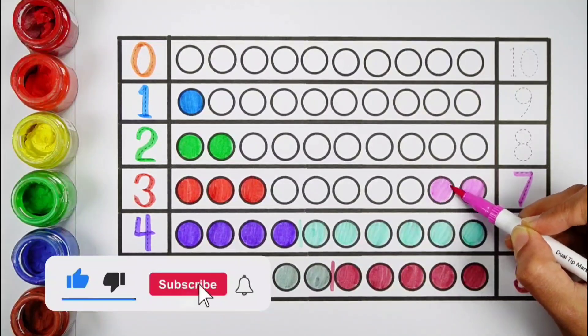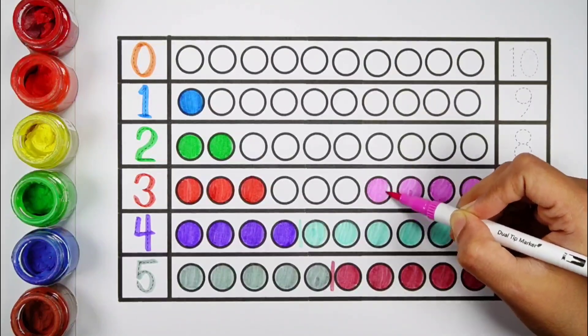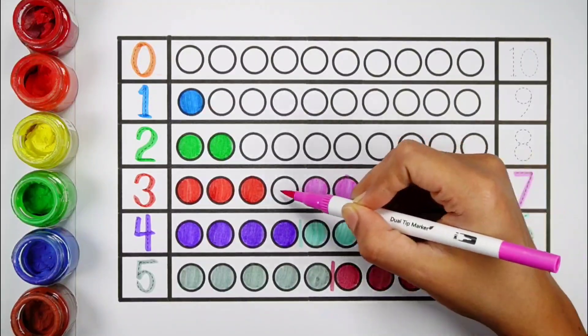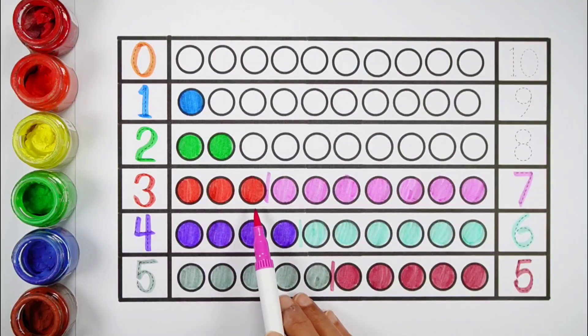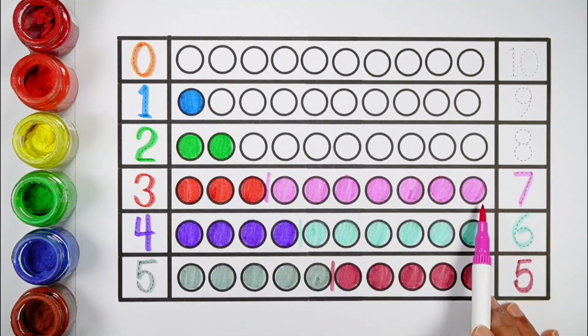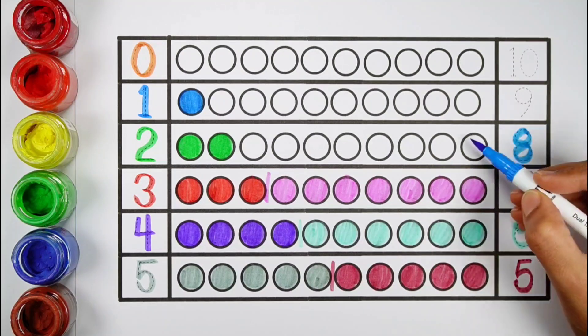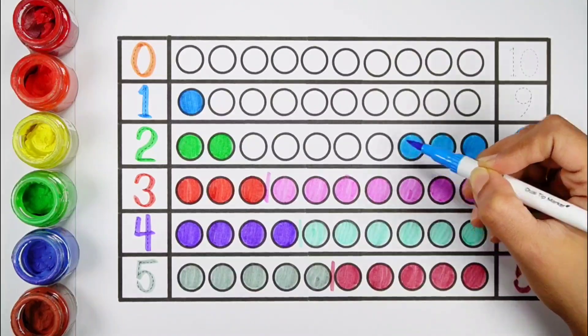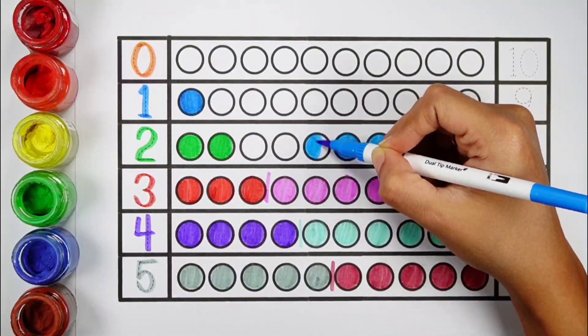1, 2, 3, 4, 5, 6, 7, 7 bolts, 1, 2, 3, 4, 5, 6, 7, 7 bolts. 1, 2, 3, 4, 5, 6, 7, 8, 9, 10, 10 bolts, 1, 2, 3, 4, 5, 6